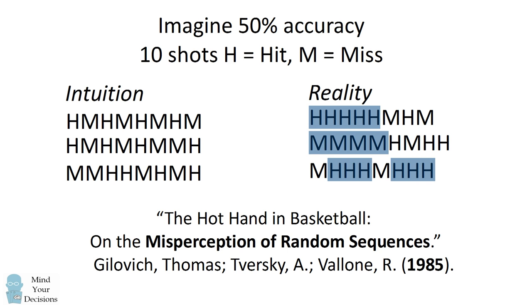In other words, the sequences of players making shots in a row or missing shots in a row were just the result of random sequences. A player who had made several shots in a row was not more likely to make the next shot than he was just to make a regular shot. This study became quite famous, and for 30 years we've thought the hot hand was a fallacy.